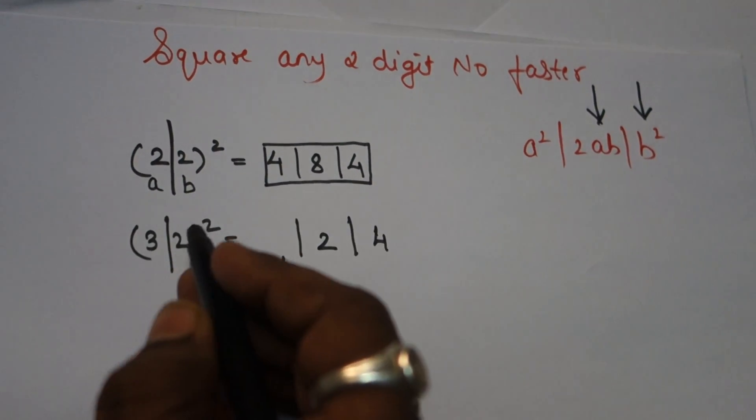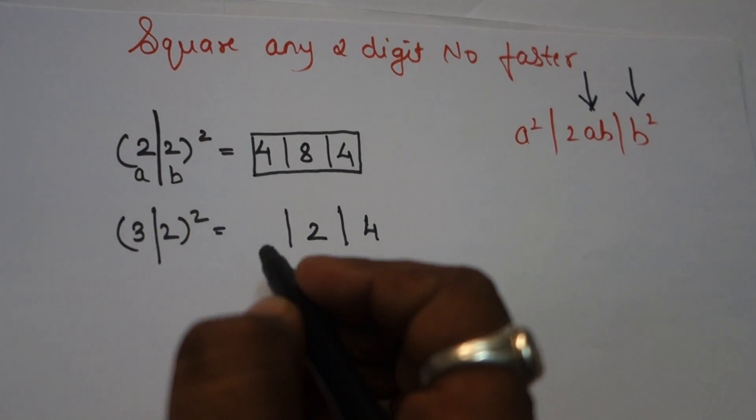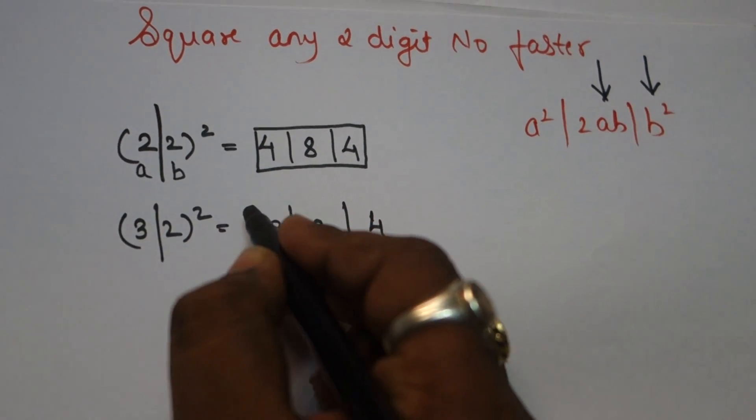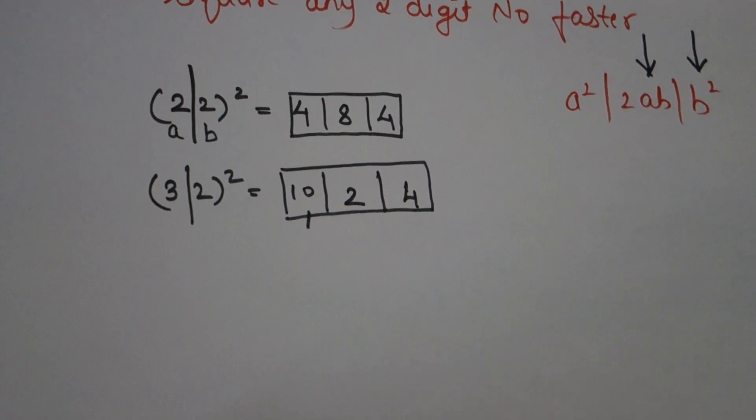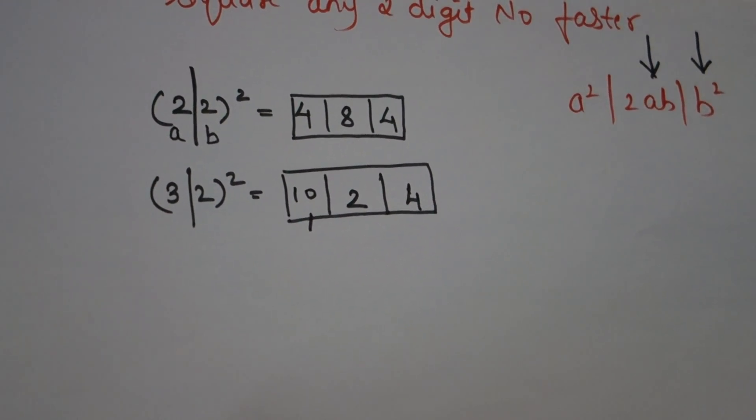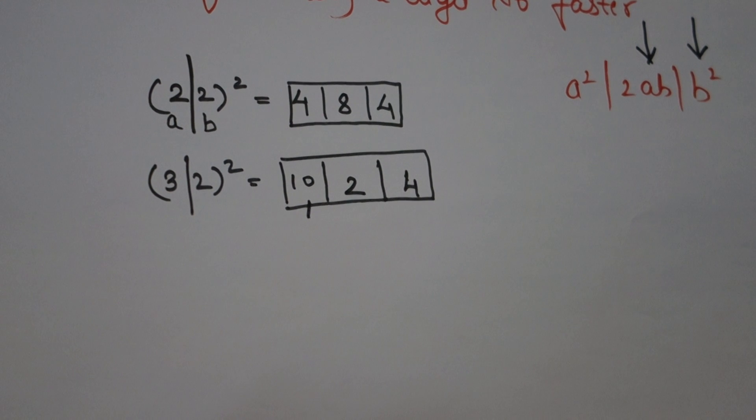Last step: a square. 3² is 9, and one carry forward makes 10. The answer is 1024. So 32² = 1024.